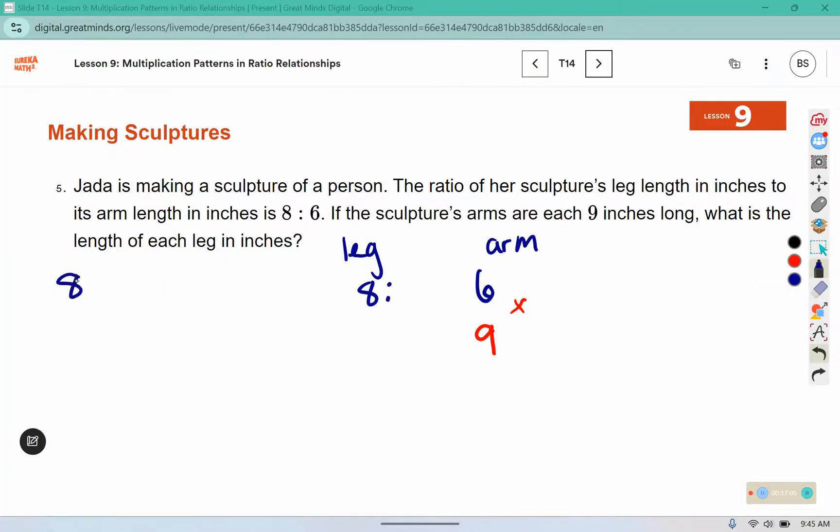If I reduce 8 to 6, both of those are divisible by 2. So I would have 4 and 3. If I can turn a 3 into a 9, that might be easier than turning a 6 into a 9. Because 3 times 3 is 9. And 4 times 3 would tell us that the length of each leg in inches is 12 inches.